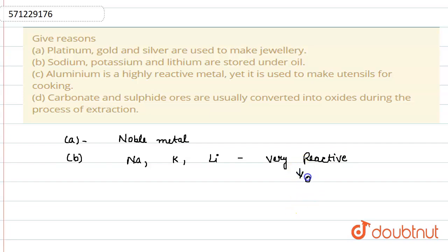Next: Aluminum is a highly reactive metal, yet it is used to make utensils for cooking. Yes, aluminum is highly reactive, but it does not corrode.